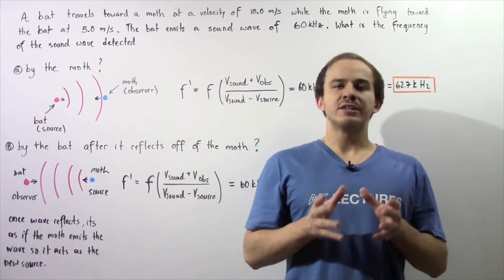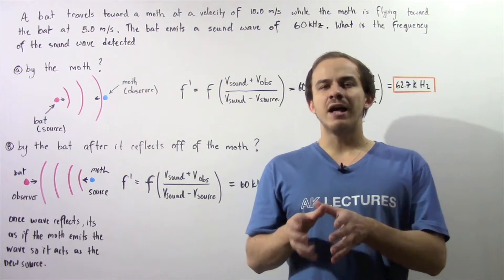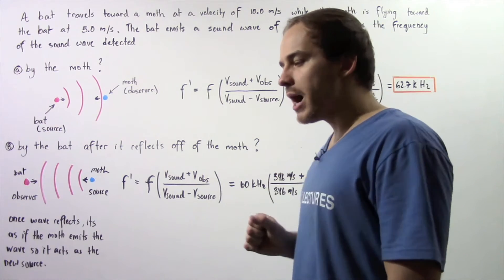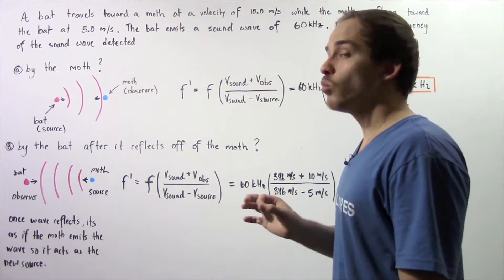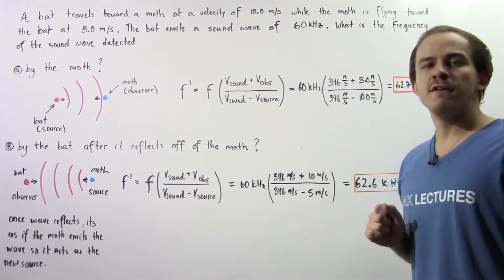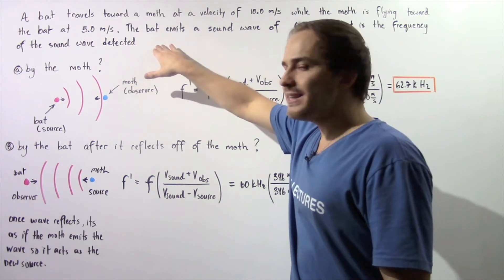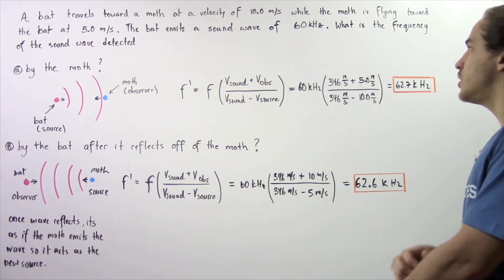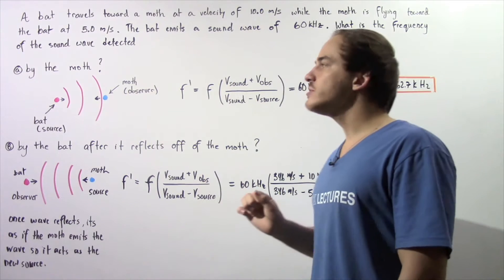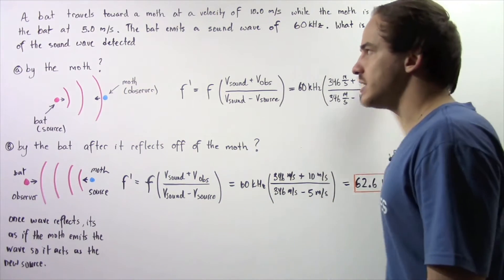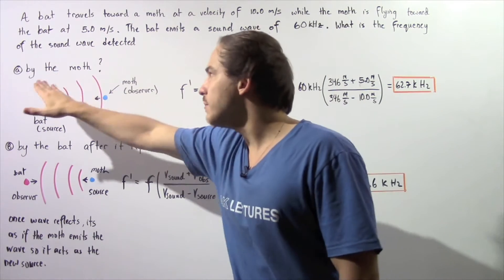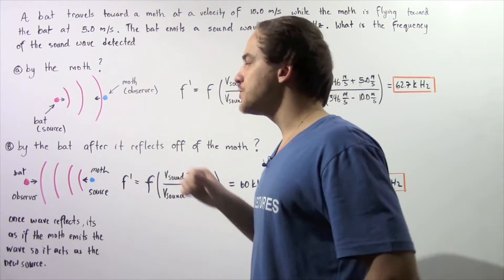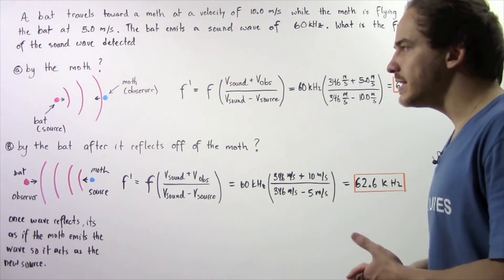Let us look at the following example dealing with calculating the frequency of a sound wave using the Doppler effect. Suppose a bat travels toward a moth with a velocity of 10 meters per second while the moth travels toward the bat with a velocity of 5 meters per second. The bat emits a sound wave with a frequency of 60 kHz. Assuming the temperature of the air is 25 degrees Celsius, what is the frequency of the sound wave detected by the moth, and by the bat after the sound wave reflects off of the moth and returns back to the bat?